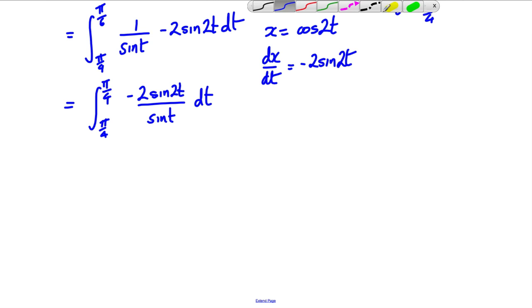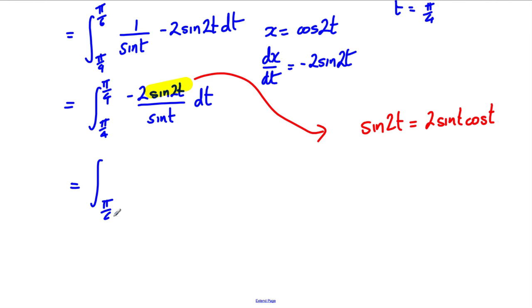Now, we could use the double angle formula on this. Sine 2t, we should know that sine 2t is 2 sine t cos t. So this is therefore the integral between pi by 4 and pi by 6. This would be negative 4 sine t cos t all over sine t dt. Now, the sine t's cancel, and we've got ourselves the integral between pi by 4 and pi by 6 of negative 4 cos t dt.